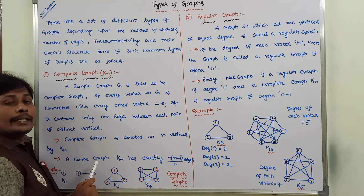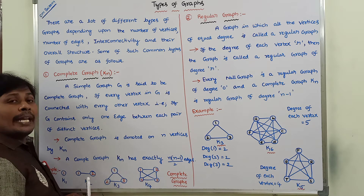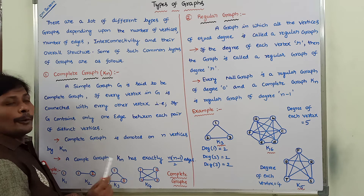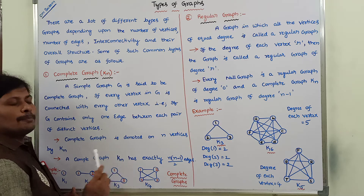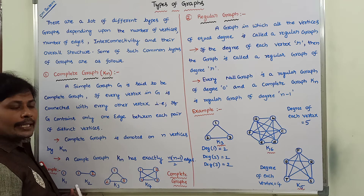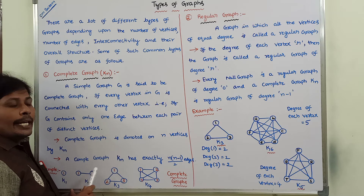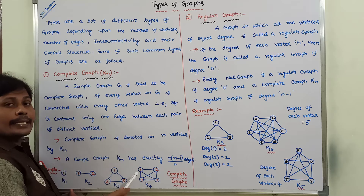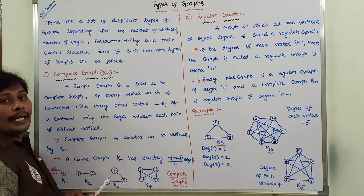This is one complete graph. This graph consists of four vertices: vertex 1, vertex 2, vertex 3, vertex 4. Vertex 1 is connected with the remaining vertices in the graph — that is 2, 3, and 4. Vertex 1 is connected with 3 directly, and 1 is connected with 4 directly.